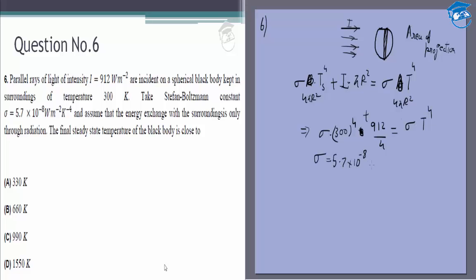The value of σ is given to be 5.7 × 10^-8, so from that you can get T^4 = 300^4 + (912/4) / (5.7 × 10^-8).